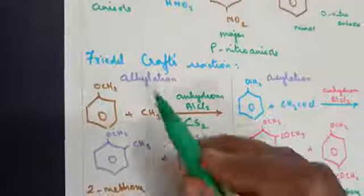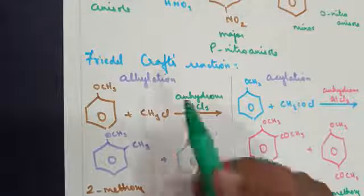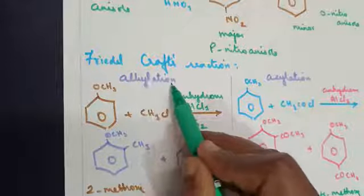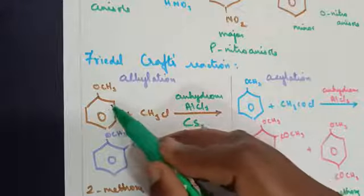The last reaction: Friedel-Craft's reaction. Two types of reactions it undergoes—one is alkylation, the other is acylation. Here again, we are considering anisole.